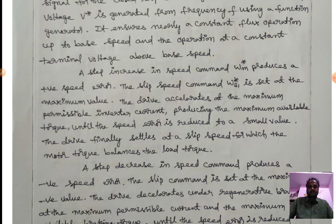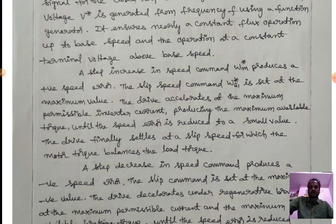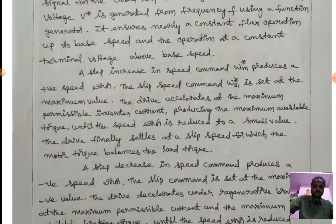A step increase in the speed command WM_reference produces a positive speed error. The slip speed command WS1 is set to its maximum value, and the drive accelerates at maximum possible inverter current, producing maximum torque, until the speed error is reduced to a small value and operation reaches a balanced condition.